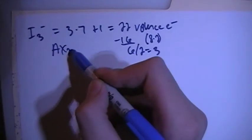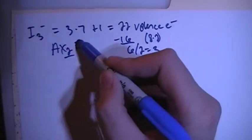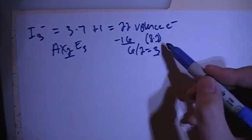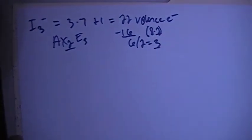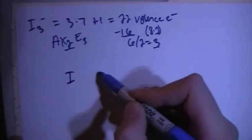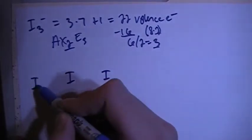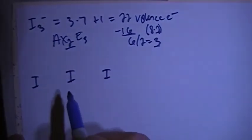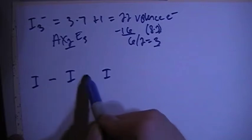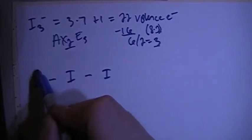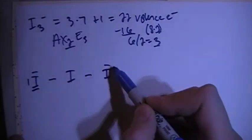Let's go ahead and draw the structure. We have three iodines: one, two, three. Let's single bond them together and then fill out the external octets, so eight on each of these external iodines. That's the 16 electrons - there's eight here and eight here.